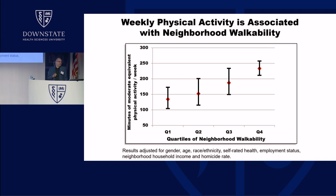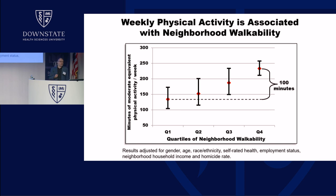We also looked at physical activity patterns. Plotting covariate-adjusted predicted minutes of physical activity across quartiles of walkability in New York City, you see a really nice upward trend: as walkability increases, physical activity increases. The difference between the lowest and highest quartile is 100 minutes of moderate intensity physical activity. The health-based recommendation is 150 minutes, so variance in neighborhood walkability accounts for two-thirds of the health-based recommendation for physical activity in this sample. This is a huge effect size.